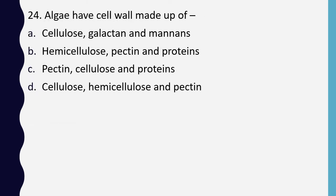Question 24. Algae have cell wall made up of: cellulose, galactan and mannans; hemicellulose, pectin and proteins; pectin, cellulose and proteins; or cellulose, hemicellulose and pectin. Correct answer is option A: cellulose, galactan and mannans.